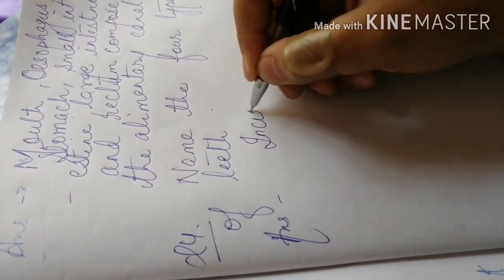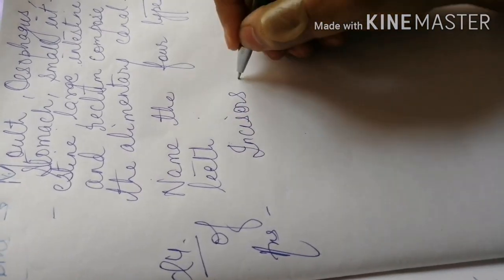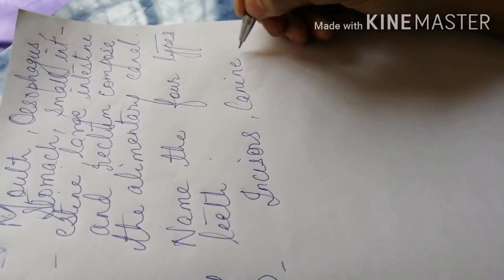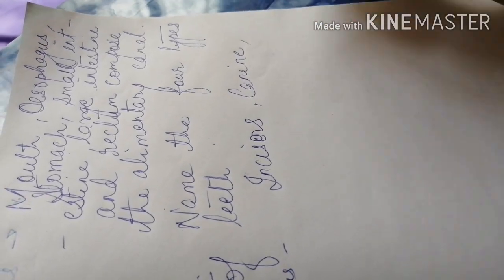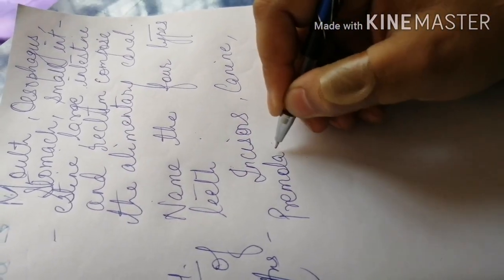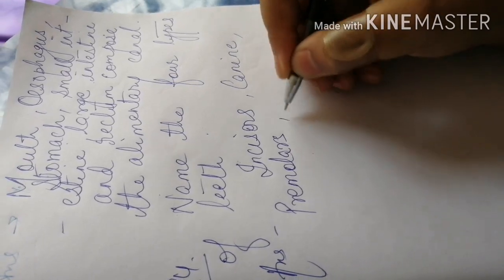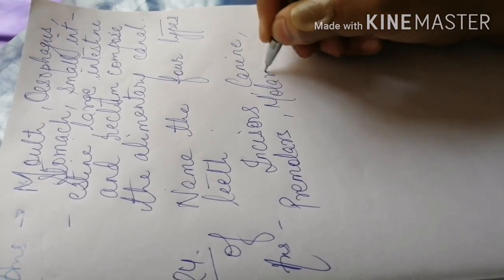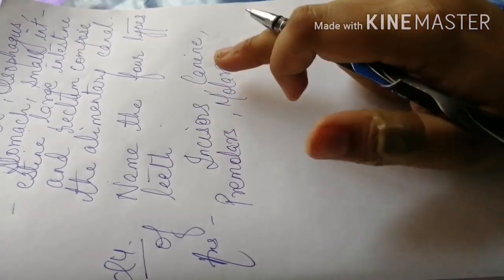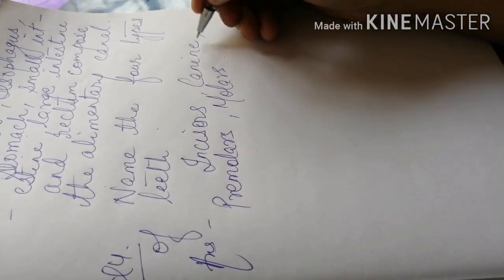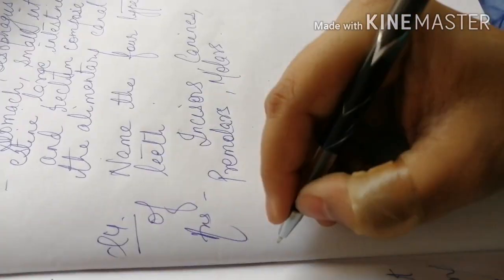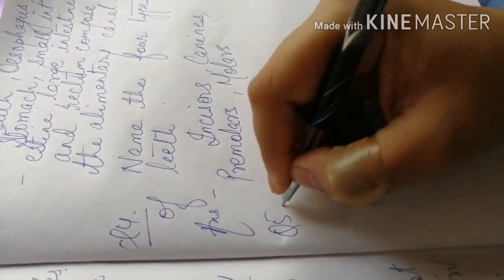First, front teeth: incisors. Second are your canines, that are the sharp teeth which are held for the tearing purpose. Third is your premolars which are meant for the grinding, and your molars. Four types of teeth are incisors, canines, premolars, and molars.